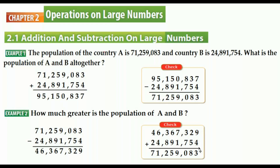Adding from the ones digit through the tens and millions: 9 plus 4 equals 13, write the ones digit 3 and carry 1, then continue through each digit. The result is 71 million 259 thousand 83, which matches the original top number. That's it everybody — thanks for watching, see you next lesson!